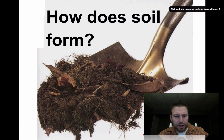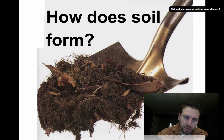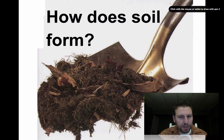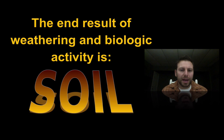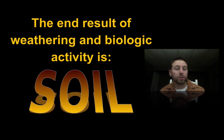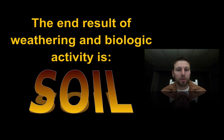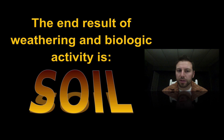If we look at this picture we can see there are a number of different things in it. We have some leaves, some grass, and what appears to be some sediments. The end result of weathering and biological activity is soil. The leaves and grass are biological material, and the sediments are the end result of weathering — combine them and we get soil.